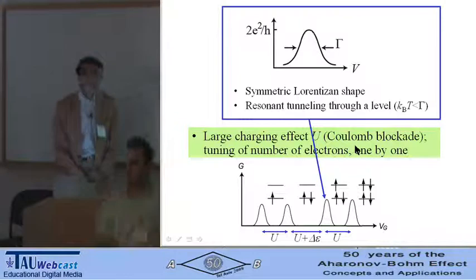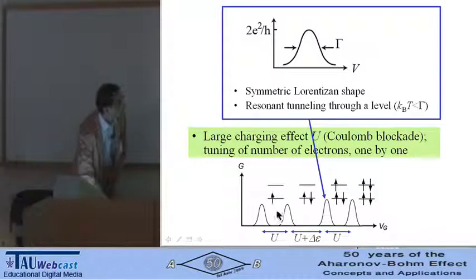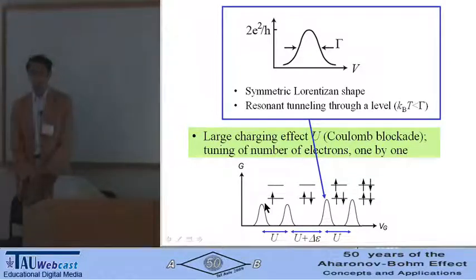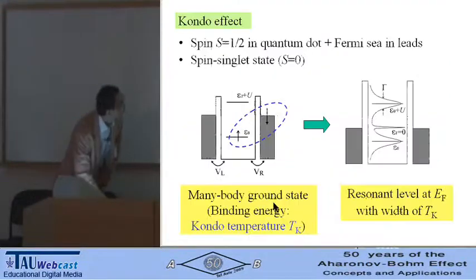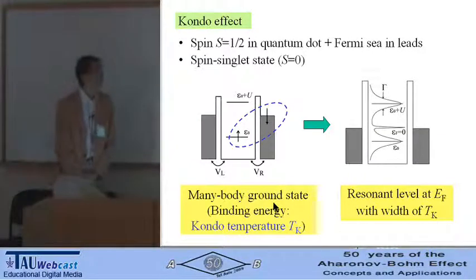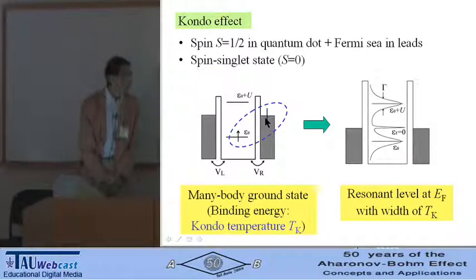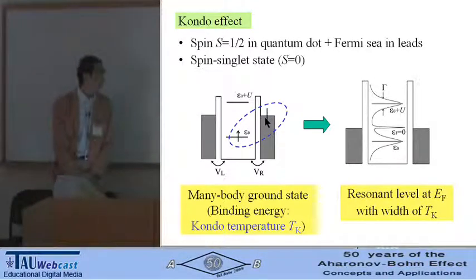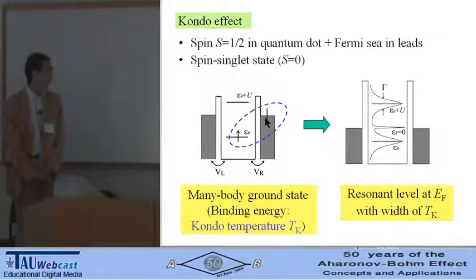Let's consider the Coulomb blockade region with spin one-half. Then the Kondo effect takes place. In the Kondo effect, the spin one-half in the quantum dot is coupled to the Fermi sea in the leads and makes the spin singlet state schematically like this. This is the many-body ground state, and the binding energy is given by the Kondo temperature Tk.